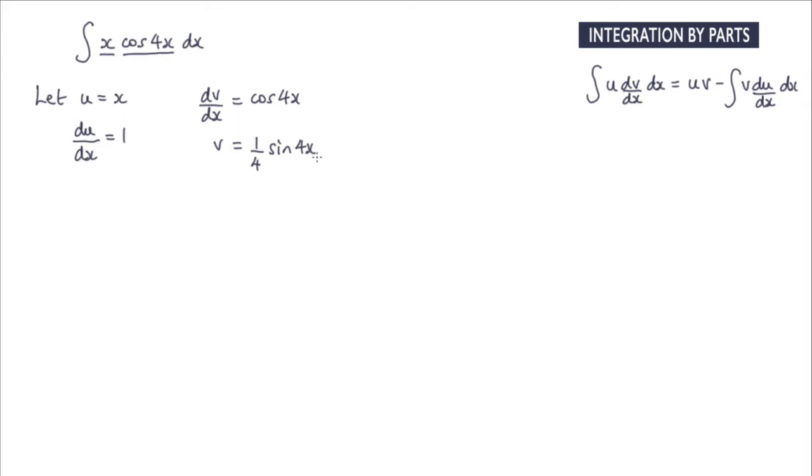So now we're in a position to actually substitute these values into this formula here. So what we have is the integral of x cos 4x with respect to x is equal to the following. It's equal to u multiplied by v. So u is x and v is 1 quarter sine 4x. So what we have is x over 4 sine of 4x.